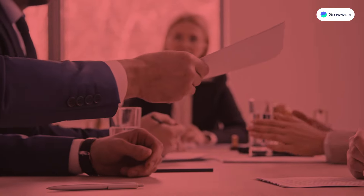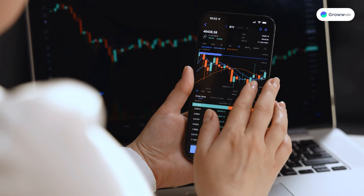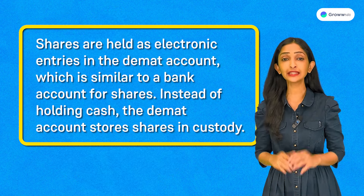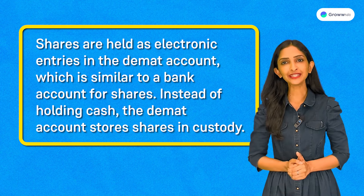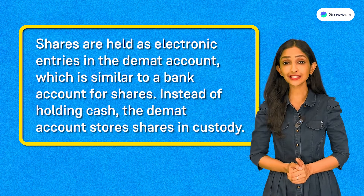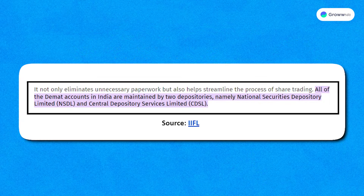A DMAT account is like a digital locker for your stocks. Instead of physically handling your share certificates, you can trade them electronically, making buying and selling stocks as easy as clicking a button. DMAT accounts aren't limited to just stocks — they can store bonds, ETFs, mutual funds, and other securities. Shares are held as electronic entries, similar to a bank account for shares. Instead of holding cash, the DMAT account stores shares in custody.